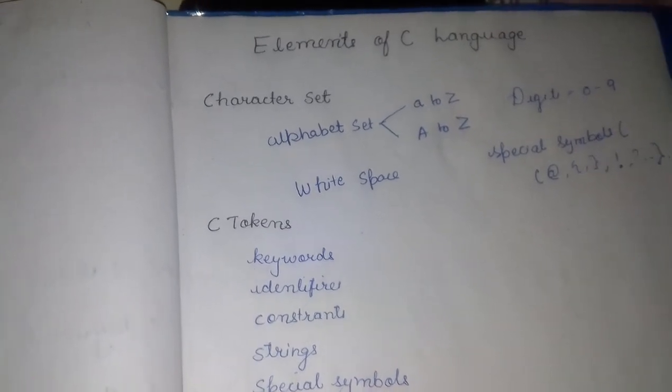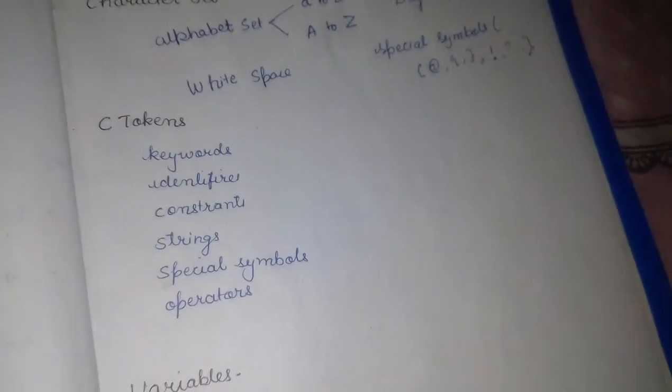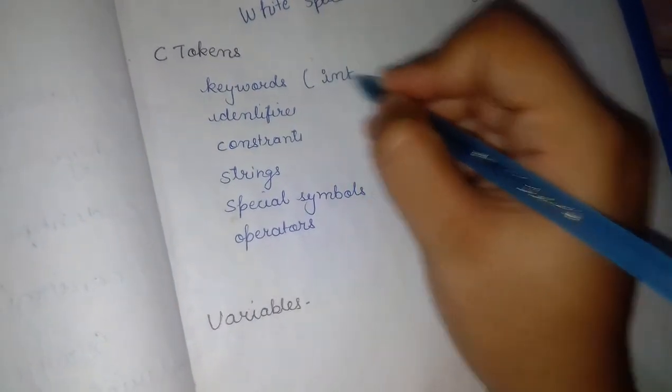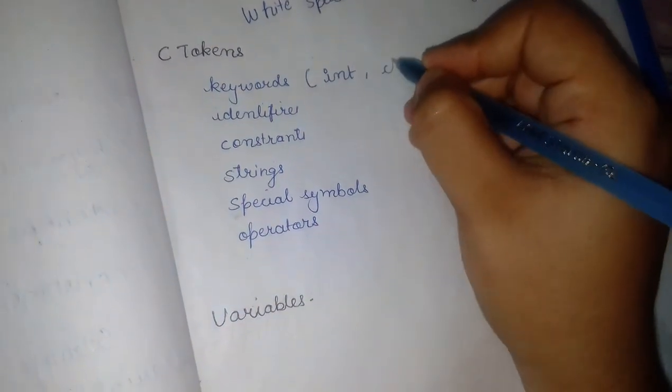If we talk about C tokens, these are the smallest individual units in C programs. It is of six types. Keywords are examples like int, char, do, if. All these are predefined keywords.